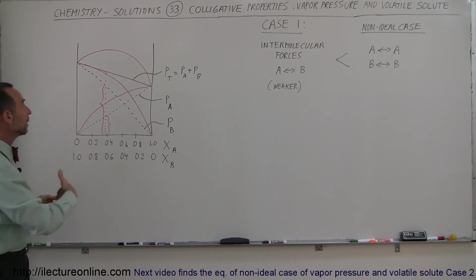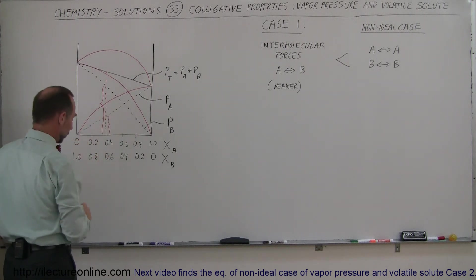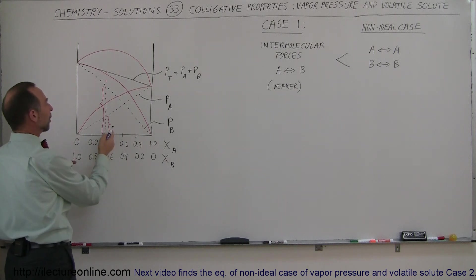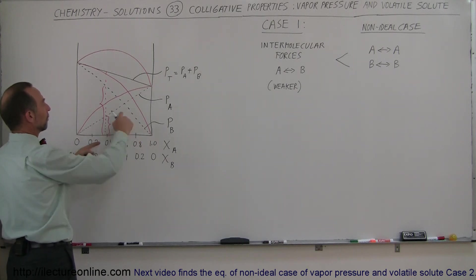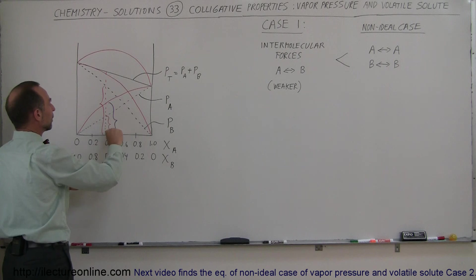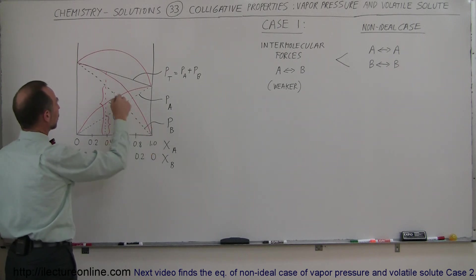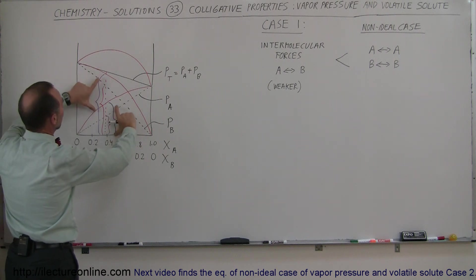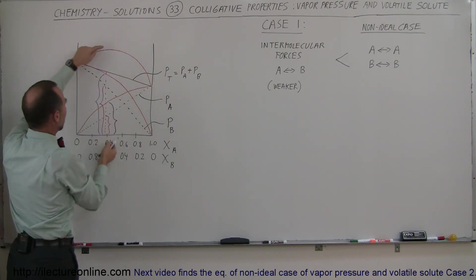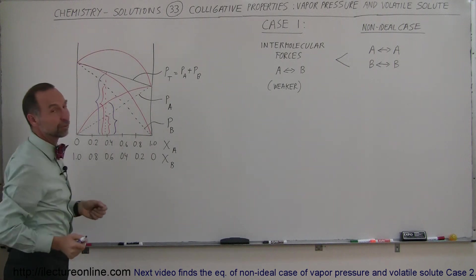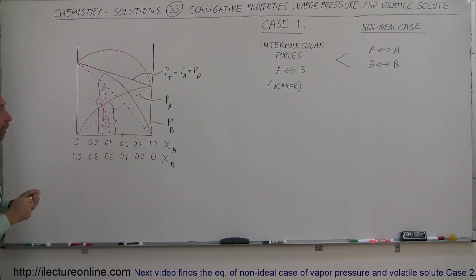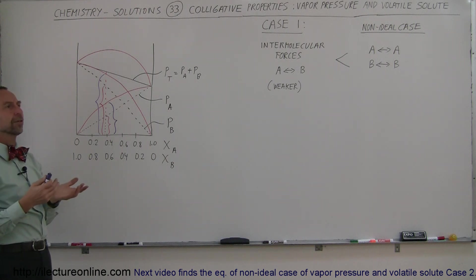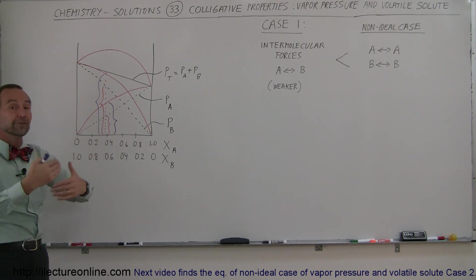In any case, the partial pressure or vapor pressure of component A will be this much when they're mixed, and the vapor pressure of component B will be this much when they're mixed. The total pressure is simply these two added together, which is why the total vapor pressure is higher than in the ideal case. That's what happens when you mix two components that are very different in structure and therefore very different in molecular properties.